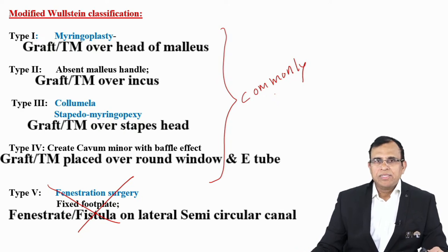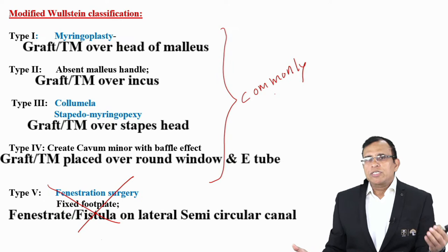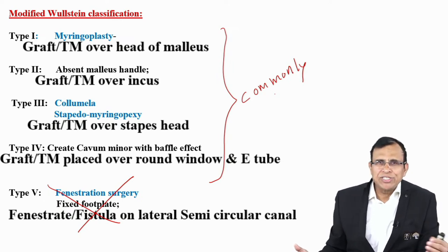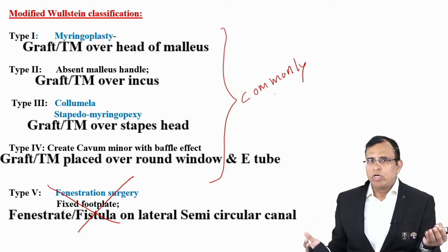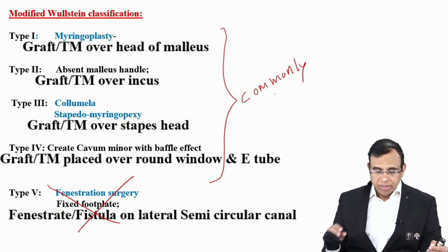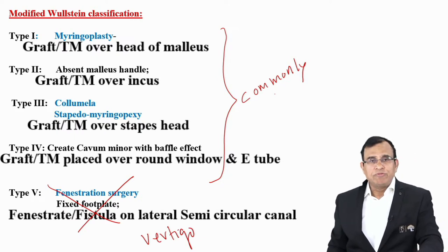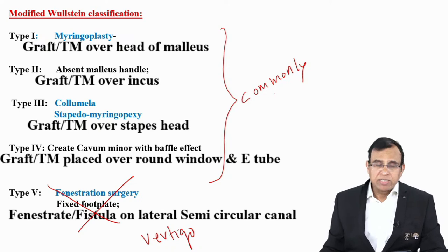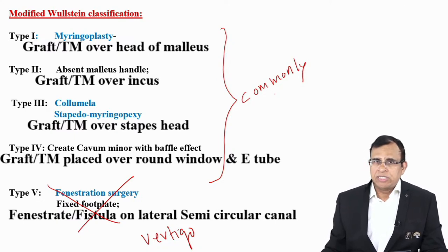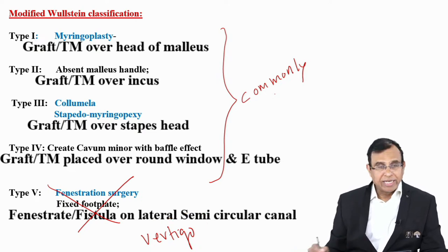Before any surgery we weigh the advantages against the disadvantages. If advantages outweigh disadvantages, we proceed; if not, we don't. In Type 5 tympanoplasty the big disadvantage is that the patient begins to have vertigo — a very serious symptom that can make life miserable. That's why Type 5 is not done. However, they can ask: a patient with CSOM had tympanoplasty and post-surgery complains of vertigo — which type was done? The answer would be Type 5 because it is the one that causes vertigo.